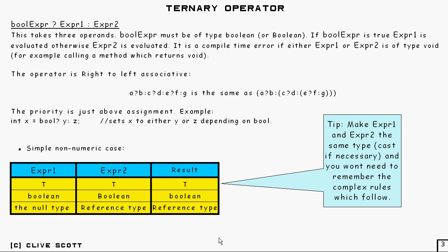And these are all the simple, fairly obvious, easy cases to deal with. And here's a little tip. If you make expression 1 and expression 2 the same type, by casting if necessary, then you won't need to remember any sort of complex rules which follow. So, if you find them difficult to remember and you can't remember them and you need to do something, just cast both expression 1 and expression 2 to the same type and you won't worry about it.